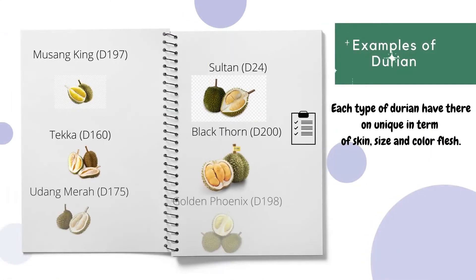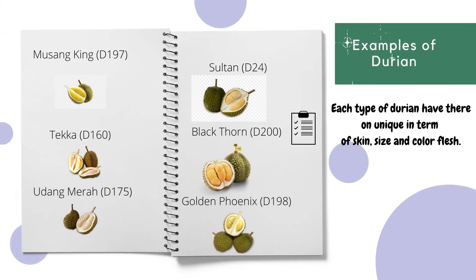This picture is an example of a durian. Each of these durians has their own characteristics, which include the skin color, size, and color of the flesh.